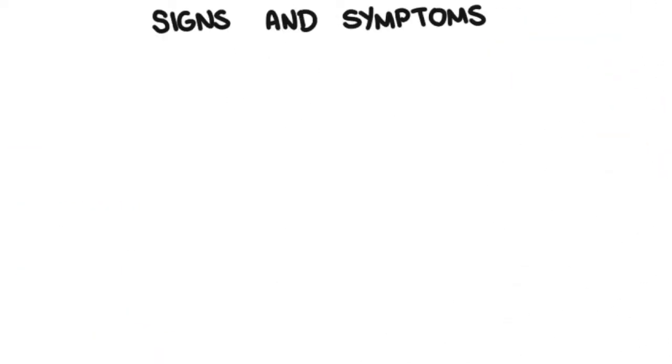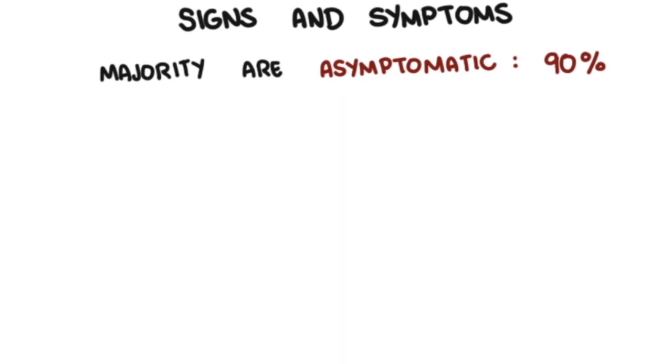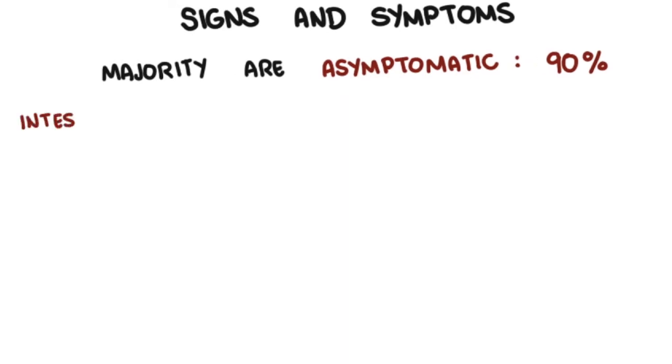Signs and symptoms of Entamoeba histolytica infection: The majority of Entamoeba infections are asymptomatic, about 90%. If a person has intestinal infection or intestinal amoebiasis, it usually occurs over 1 to 3 weeks.